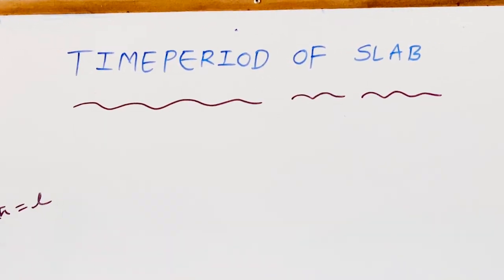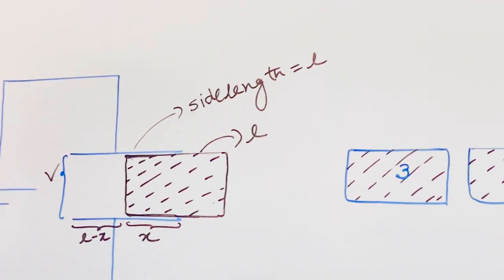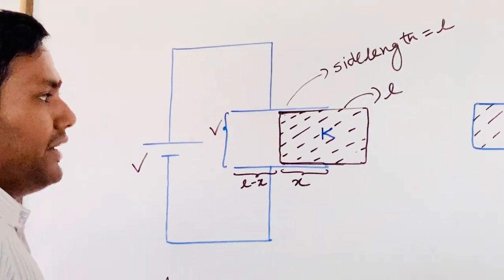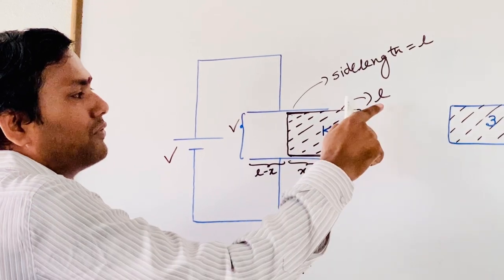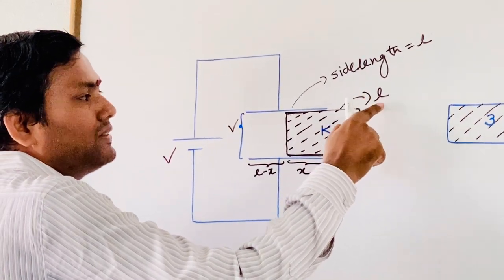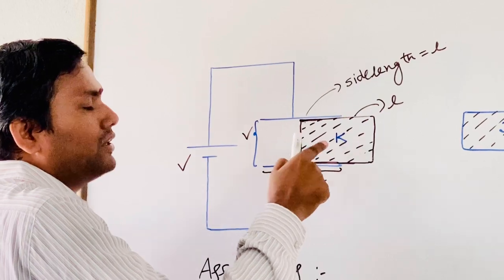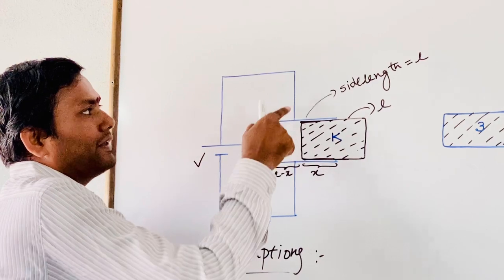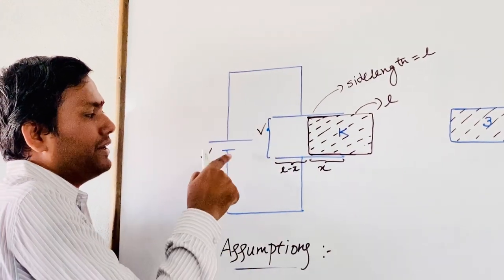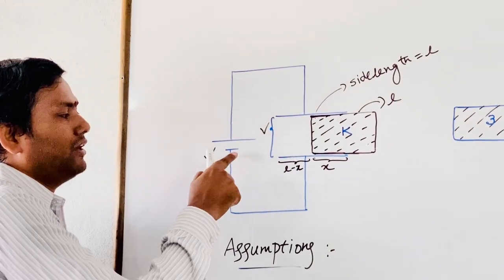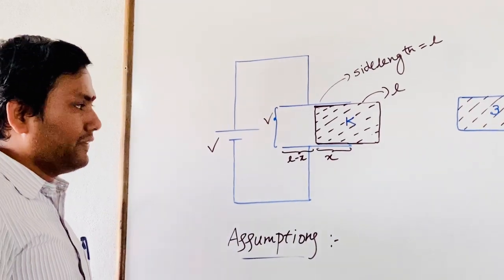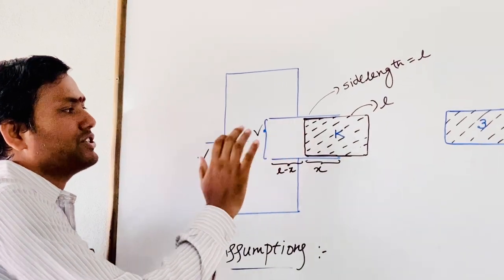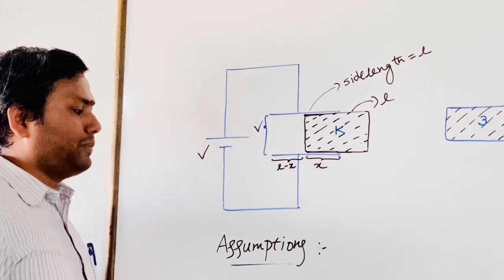Here we are seeing one dielectric slab. The dielectric slab has a dielectric constant K, and the length is L. This dielectric slab is introduced between the plates of a capacitor, where the capacitor is maintained at constant potential with the help of a battery — that is, we are doing the insertion of this dielectric at constant potential difference for the parallel plate capacitor.